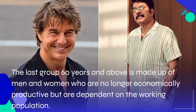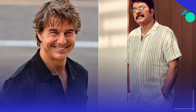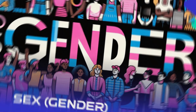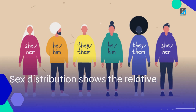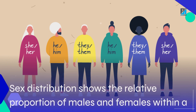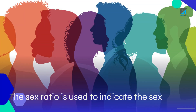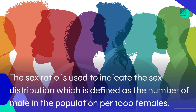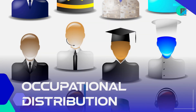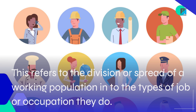Sex or gender distribution shows the relative proportion of males and females within a given population. The sex ratio is used to indicate the sex distribution, which is defined as the number of males in the population per 1000 females.